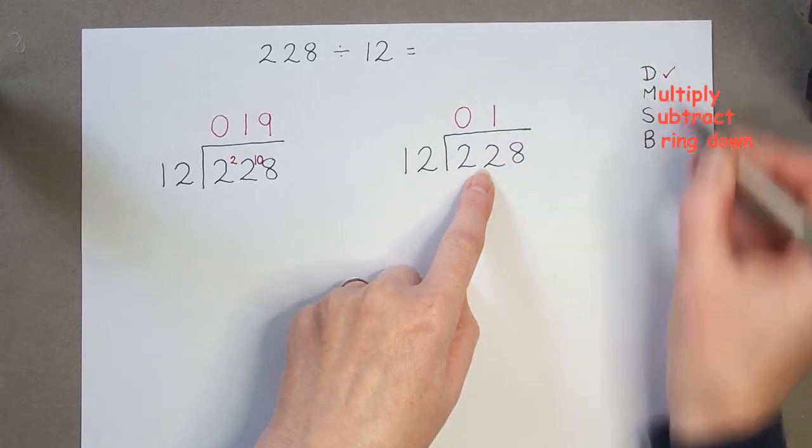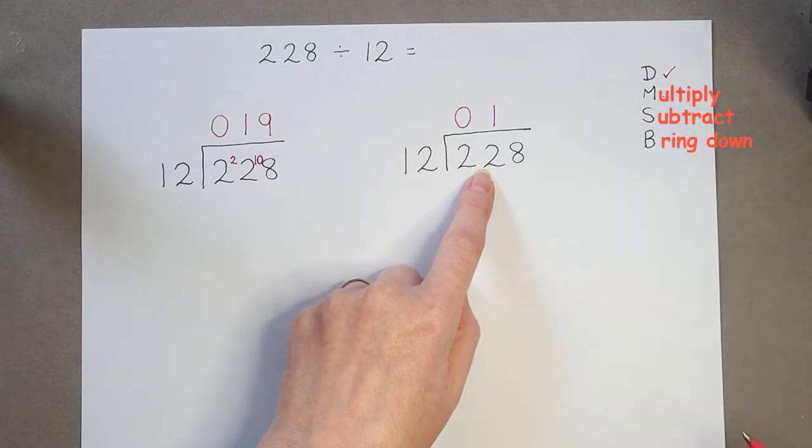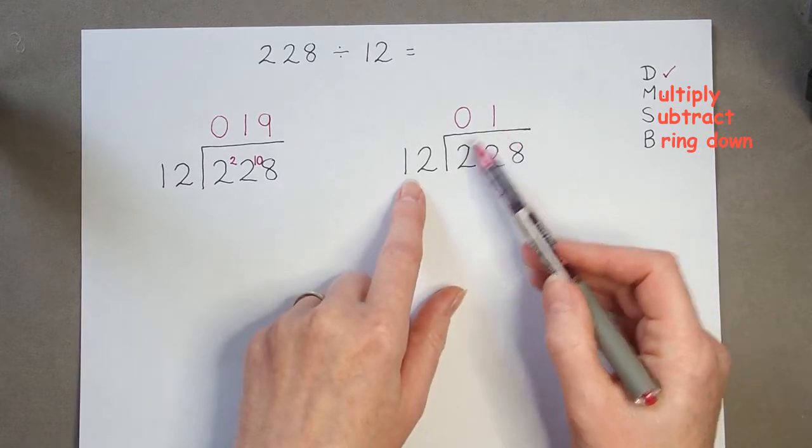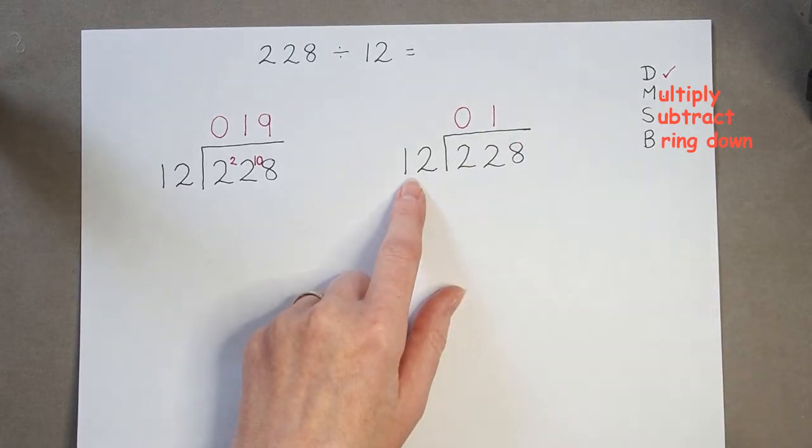I move on to multiplying. So, this is where I'm saying, well, what is 1 times 12? 1 times 12 is 12. So, I'm going to keep that in my head, because now I need to subtract.